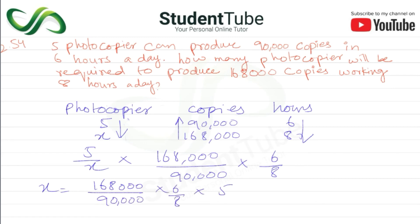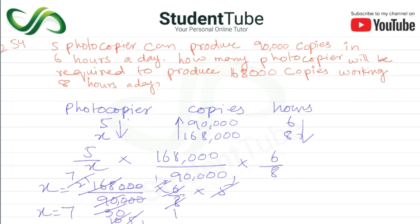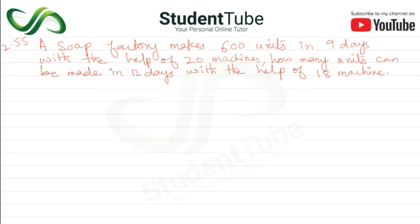After calculating — multiplying 168,000 upon 90,000 by 6 upon 8 by 5 — simplifying the fractions: 7 photocopiers will be required. So 7 photocopiers are needed.